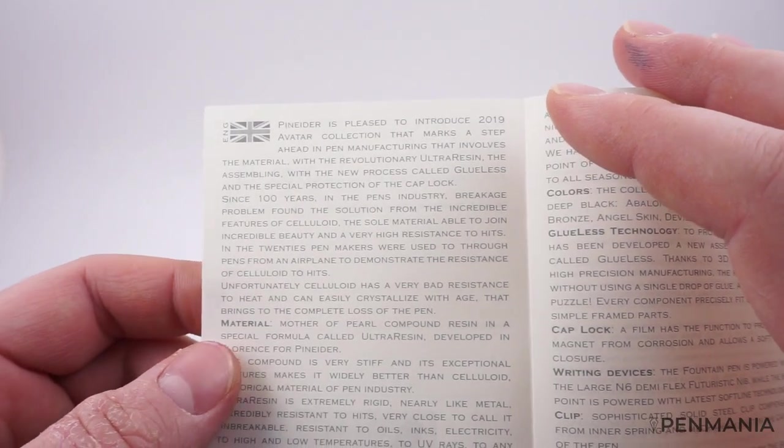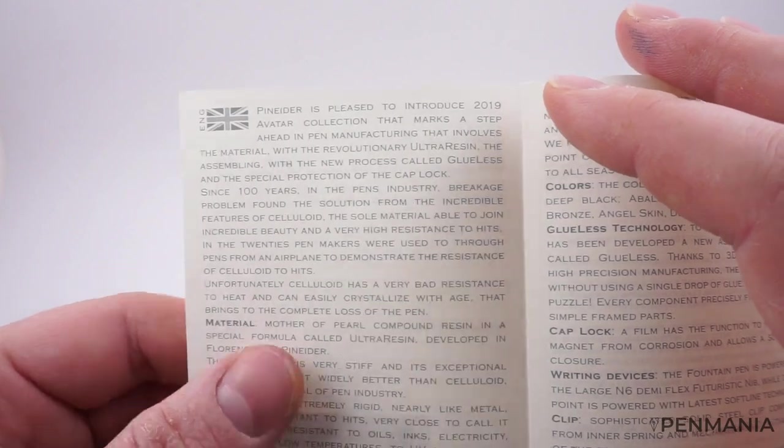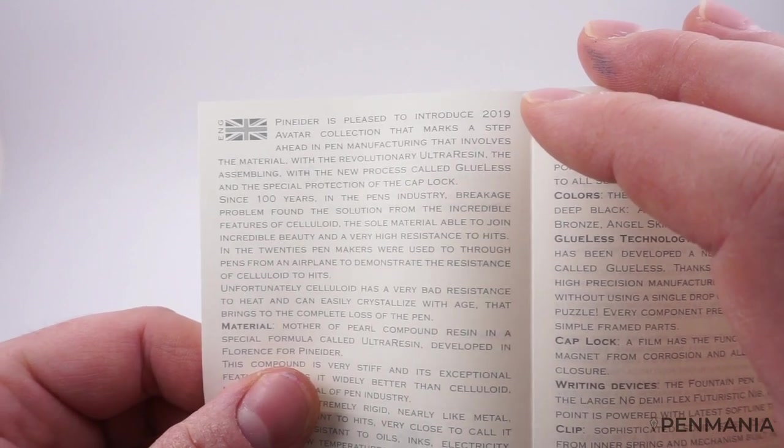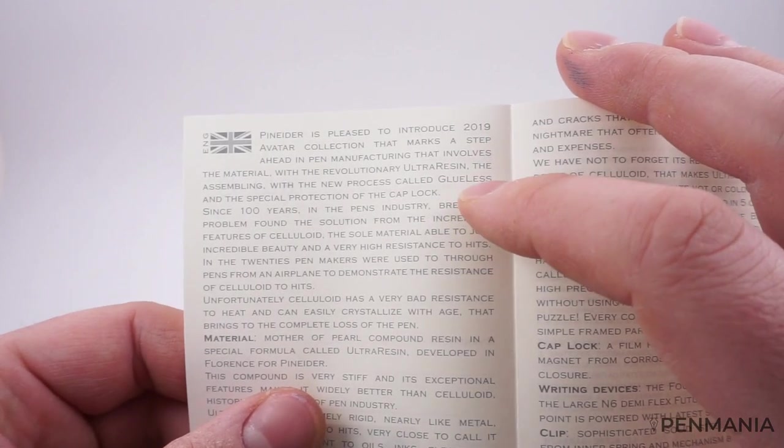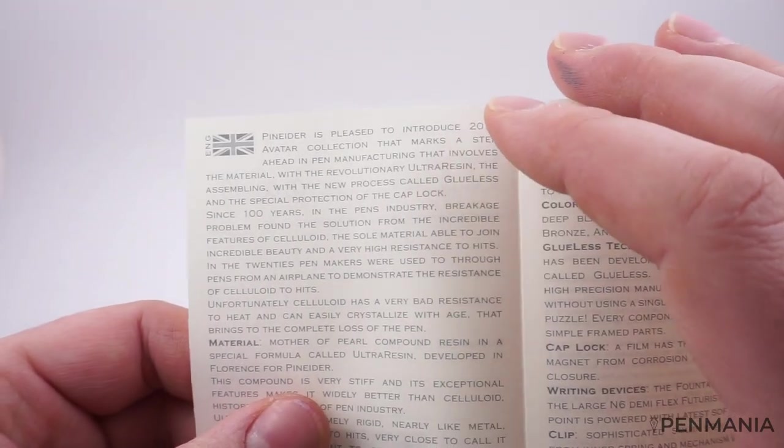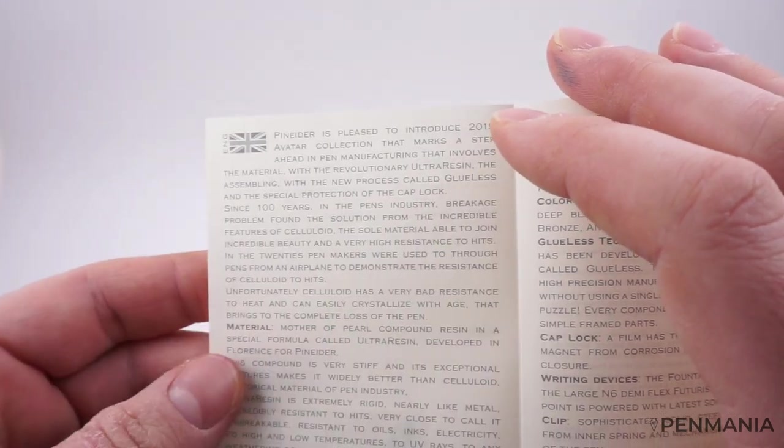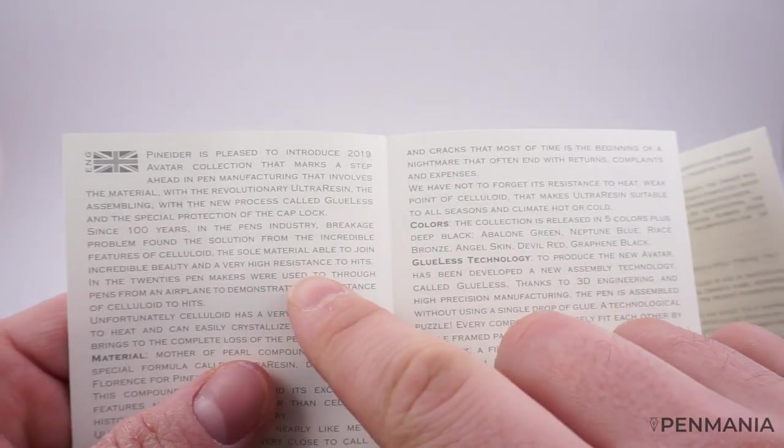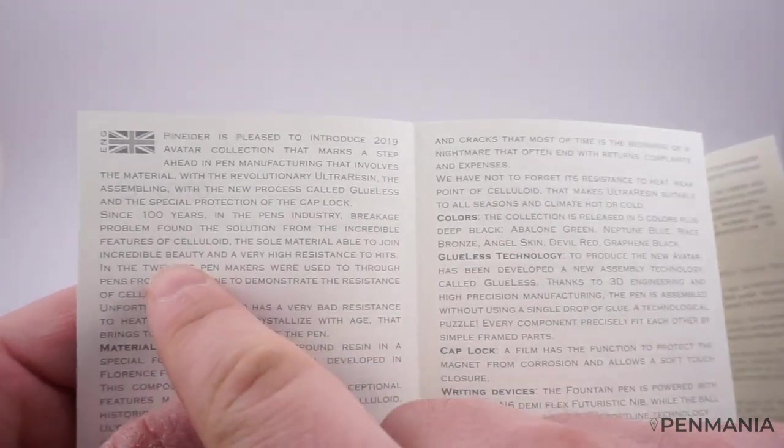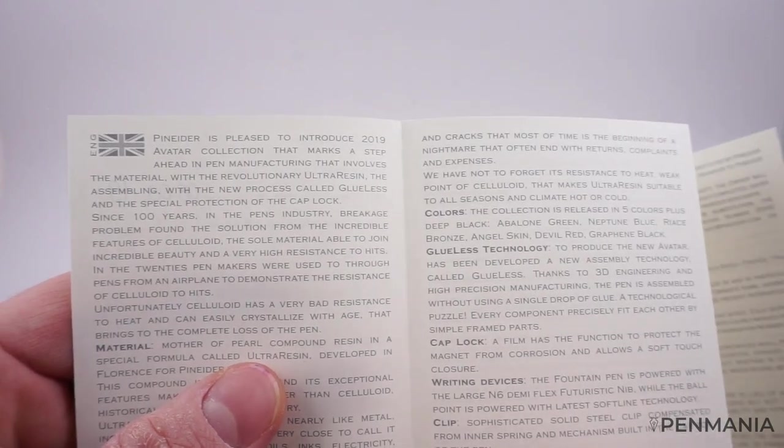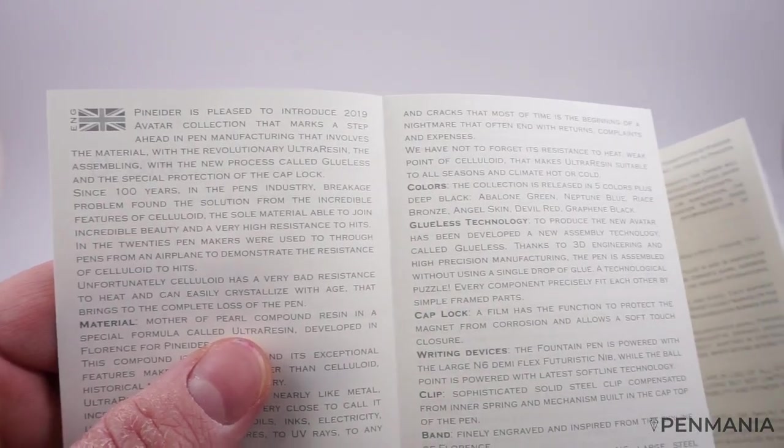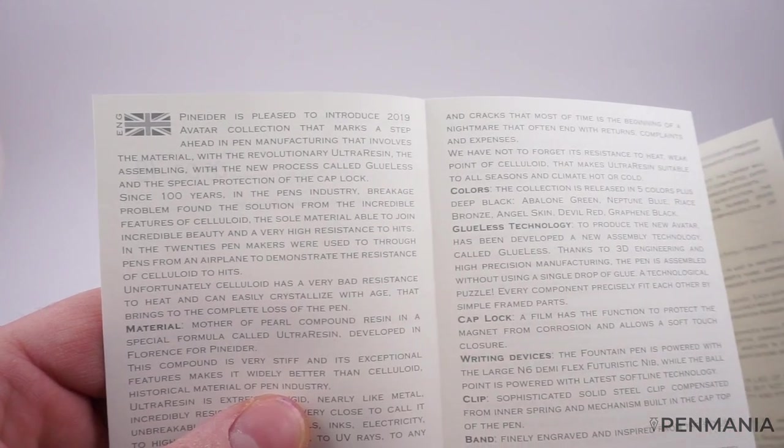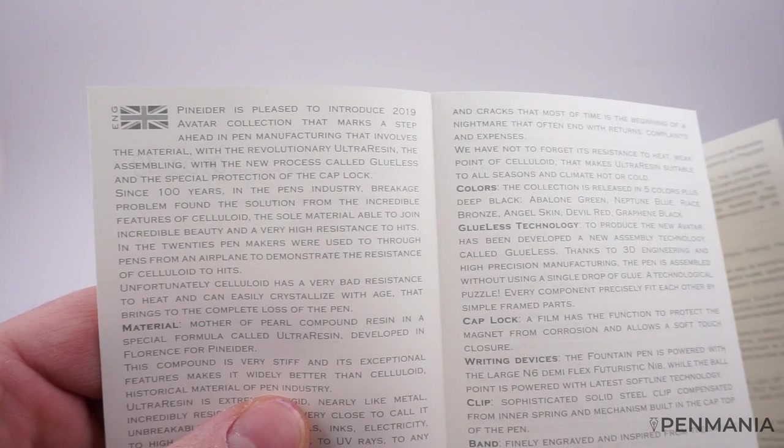It's written in Italian and also in English. It talks about the introduction of the 2019 Avatar collection, which marks an important step in pen manufacturing because it involves this new material, the ultra resin, and their assembling process which is not using any type of glue. They call this the glueless process, and they mention a special protection of the cap lock.